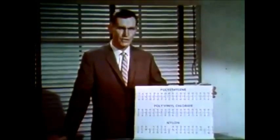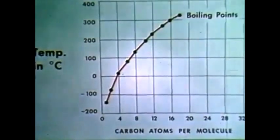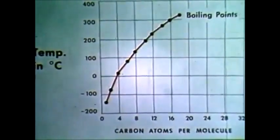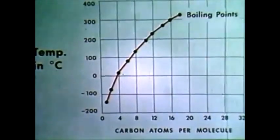Even after an atom forms a covalent bond, it still has an electrostatic attraction for its neighbors. If the attraction or cohesive energy between molecules is larger than their energy of motion, the molecules will stick together and form a liquid or solid. One way we determine cohesive energies is by measuring boiling points. On this chart, you can see that boiling points rise as molecules increase in size, which tells us that cohesive energies go up as molecules get larger.